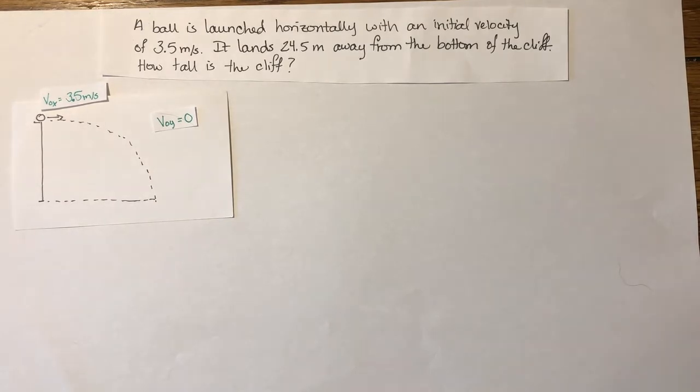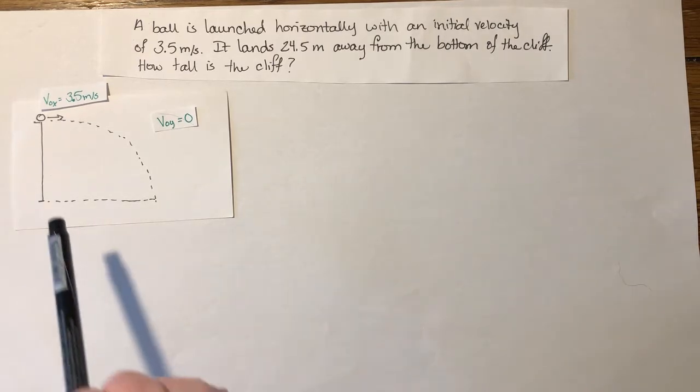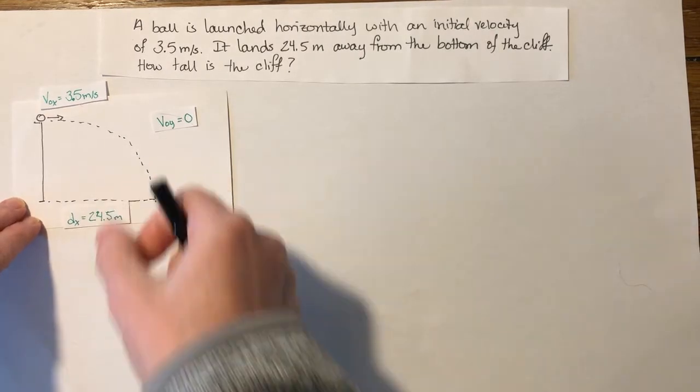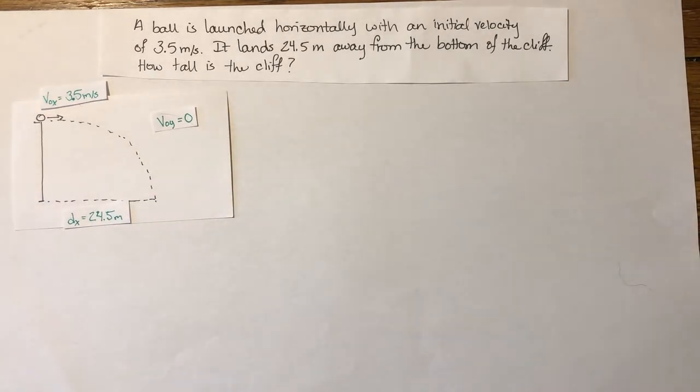And then it says it lands 24.5 meters away from the bottom of the cliff. That tells me that that is the horizontal distance. So I will add my label there. dx equals 24.5 meters.